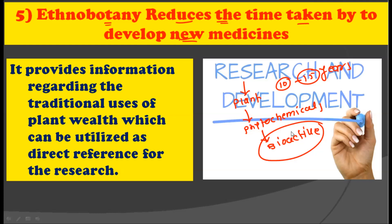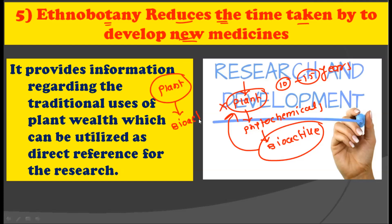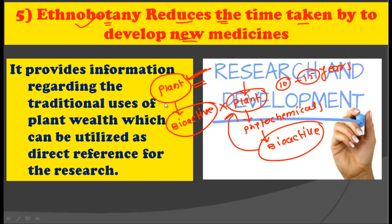Many times plants prove wasteful because no bioactive compound is found in them, making drug development a very complicated process. However, with the knowledge of ethnobotany, plants of medicinal value — those already known to contain bioactive compounds — are identified in ethnobotanical studies. We can therefore directly choose a plant known to have a bioactive compound, reducing the time required for research to develop new medicines.